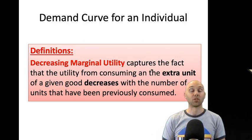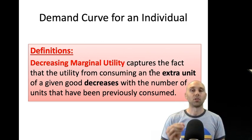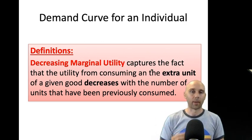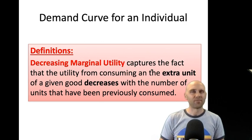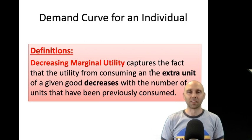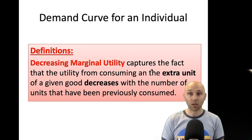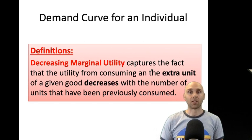Utility means happiness. Marginal means one more. Decreasing — we know what that means. So it's saying you get less and less happy each time you consume one more good than the one before. The first beer is pretty good. The second beer — also pretty happy, but not as happy as from getting that first beer. The third one, not quite as much. The same goes for consuming pizza, t-shirts, consuming anything. That happiness from an extra unit is going down over time.